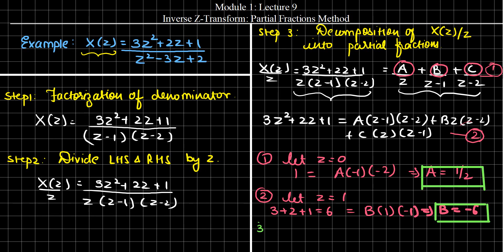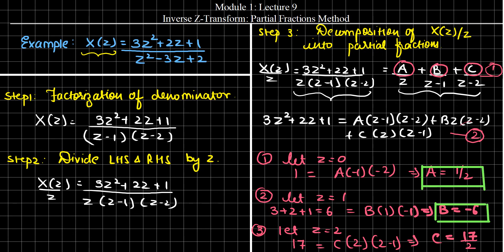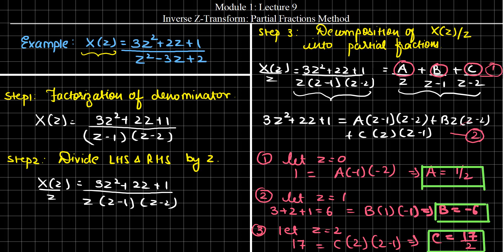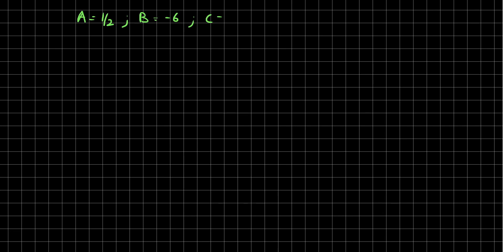In the third case, let Z equal to 2. The LHS becomes 3·4 plus 2·2 plus 1, that is 17. Only the C term persists, giving C·2·(2-1) equal to 17, which implies C equals 17/2. So from this discussion, we have A equal to 1/2, B equal to minus 6, and C equal to 17/2.